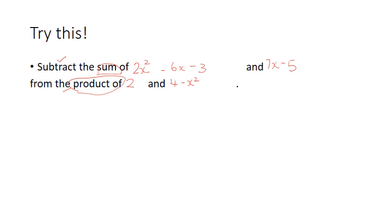Let's work out the sum first. We have 2x squared minus 6x minus 3. This whole portion here, this expression, we add it to 7x minus 5. Now, what do we get? When we open the bracket...